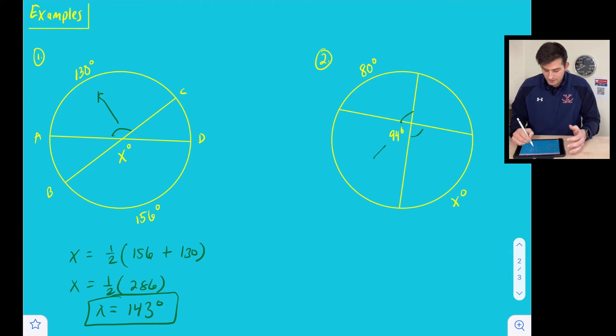Well, we do know that this angle right here is 94 degrees, so if 94 and this angle right here are a linear pair, then that means they're supplementary, which means they're going to add to 180 degrees. So if we subtract 180 minus 94, we're going to get 86 degrees.